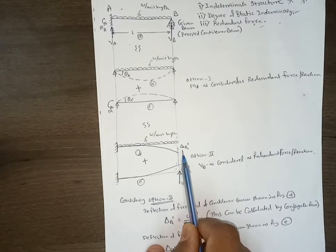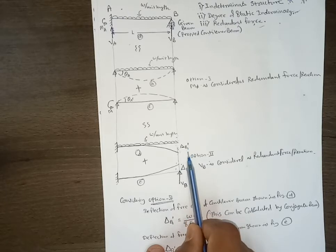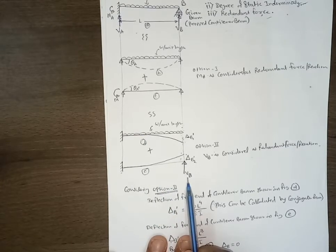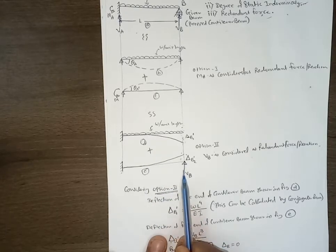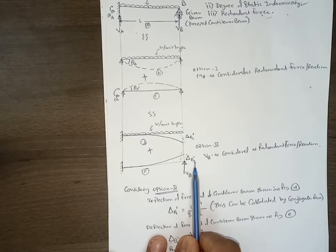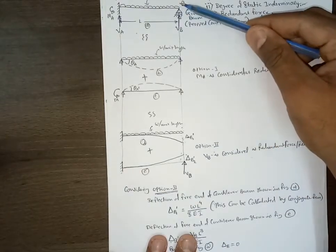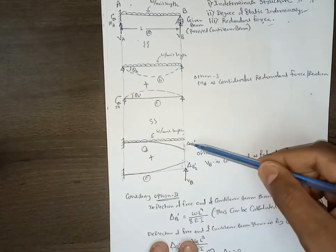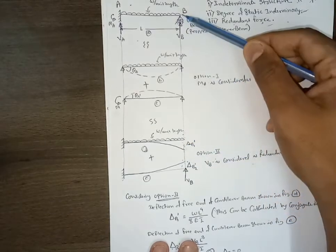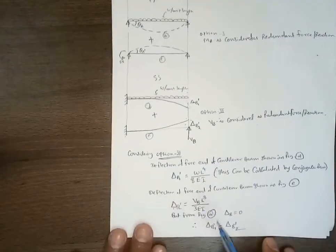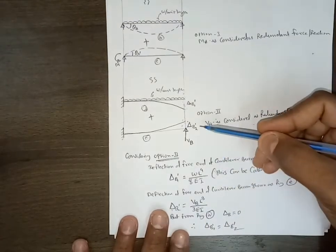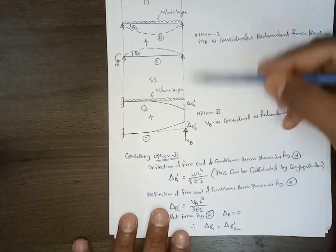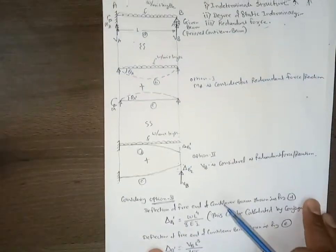Then we consider the same cantilever beam without external load but applying the removed redundant force VB upward. Due to this force there will be a deflection delta-B-dash-two. In the actual problem, deflection at point B is zero since the support is present. By the principle of superimposition, the addition of these two deflections must equal zero — meaning delta-B-dash-one and delta-B-dash-two must be equal in magnitude and opposite in direction.